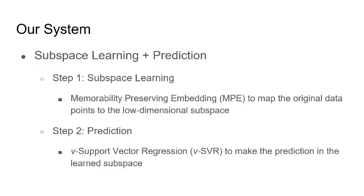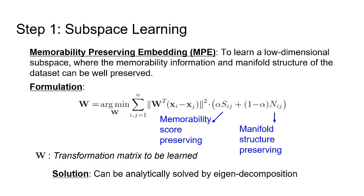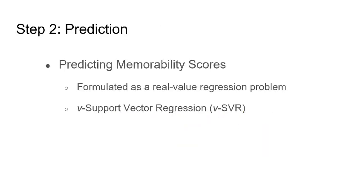Our system is composed of two parts. The first part is subspace learning, and the second part is prediction. In the first part, we propose the memorability preserving embedding to learn a low-dimensional subspace in which the memorability information, as well as the manifold structure of the dataset, can be well preserved. In the second step, we predict the memorability scores by formulating the problem as a real-value regression problem and using SVR to solve it.